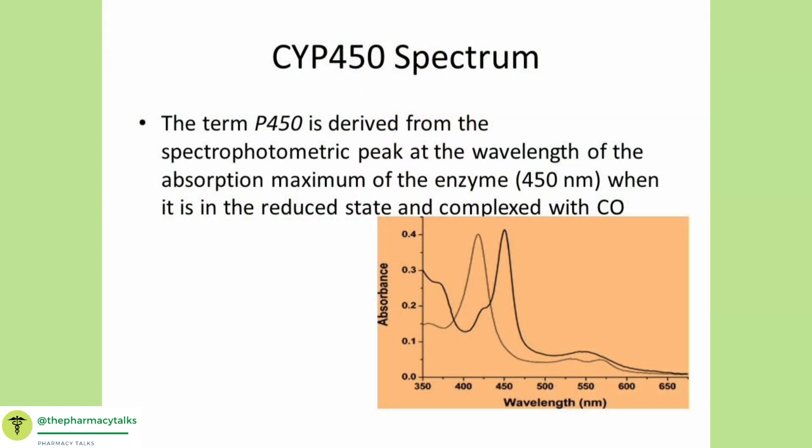Cytochromes are proteins belonging in superfamilies containing heme as a cofactor. Therefore, they are called hemoproteins. They are used as substrates in enzymatic reactions. The term P450 is derived from the spectrophotometric peak obtained at the maximum optic density of the enzyme, 450 nm, when it is in its reduced state associated with carbon monoxide.